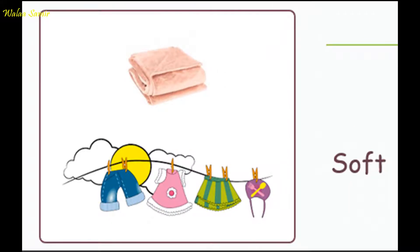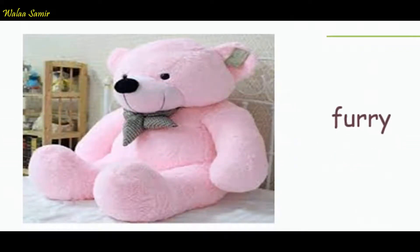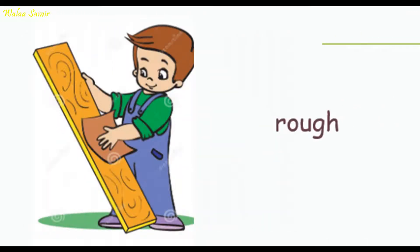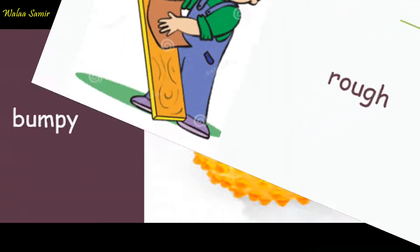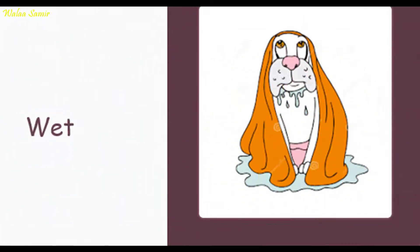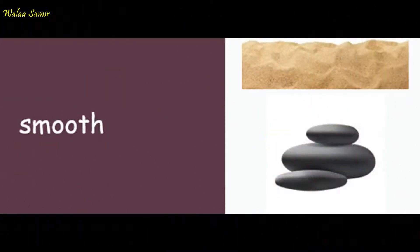A towel feels soft. A teddy bear feels furry. A rock feels hard. A piece of wood feels rough. A ball with pins feels bumpy. When it rains, it feels wet. The sand feels smooth.